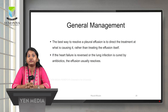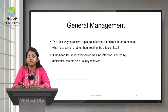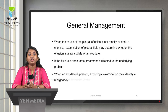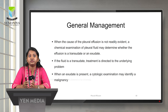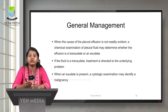The best way to resolve pleural effusion is to direct treatment at what is causing it. If heart failure is the cause, we have to treat heart failure before treating the effusion. If lung infection is the cause, we treat it with antibiotics, and if the infection is cured, the effusion will resolve on its own. When the cause is not evident, chemical examination of pleural fluid determines whether the effusion is a transudate or an exudate. If it is a transudate, treatment is directed to the underlying problem. If it is an exudate, cytological examination can identify any malignancy present.